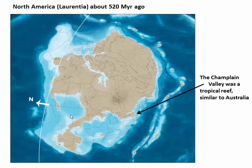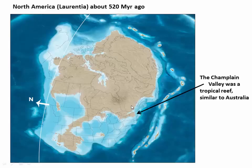Our story will start about 540 million years ago when North America was much smaller. It was called Laurentia then, and the continent was located near the equator, and nothing tectonically had happened — at least on the east coast — for about 500 million years. So it looks something like Australia: no mountains, but probably a tropical reef that existed off the coast of Laurentia, with lots of organisms living in the water and building out coral reefs.